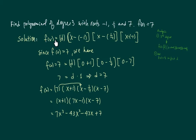All right, so here's the solution. f(x) is a constant times (x minus root 1)(x minus root 2)(x minus root 3). Since f(0) equals 7, we're going to substitute in there.